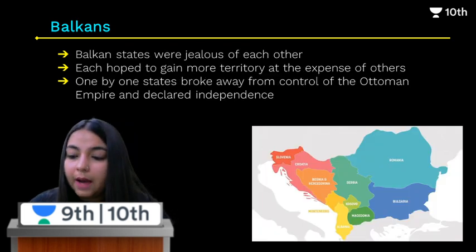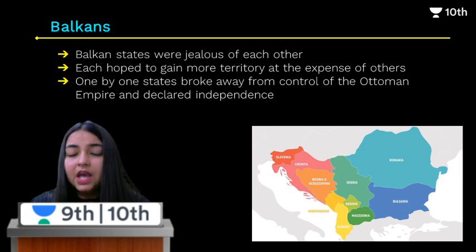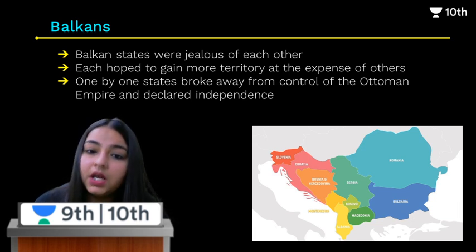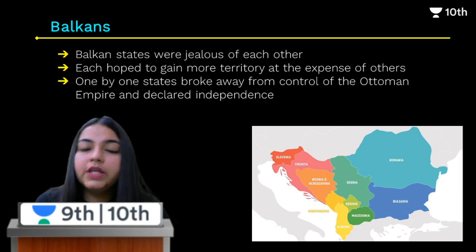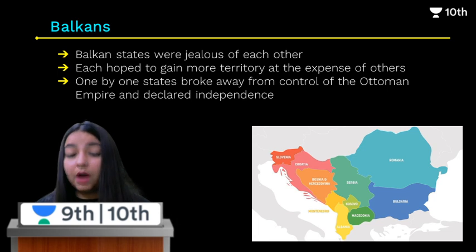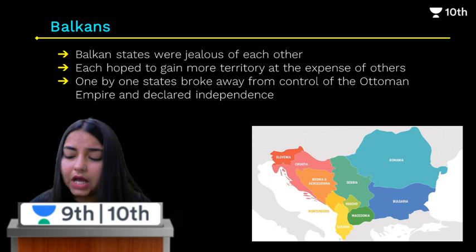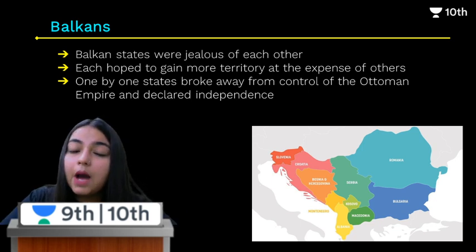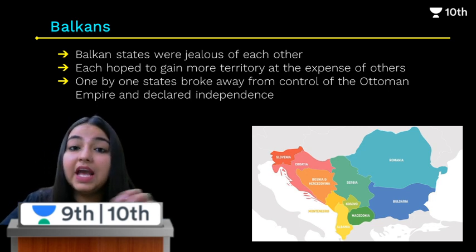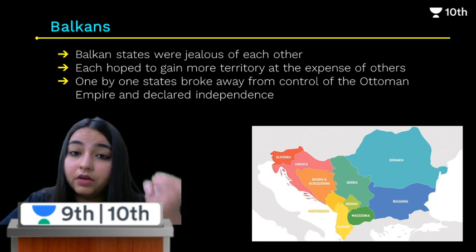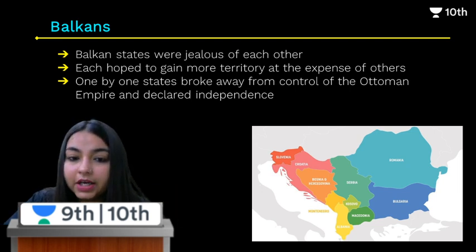One by one, the various nations and countries in the Balkans were separating from the Ottoman Empire because they wanted to be independent, to control their own territory and country. Alongside this, the Balkan states became very jealous of one another — they wanted to expand their own control, territory, and area, and extend their power over major lands. They started wars and conflicts among themselves.